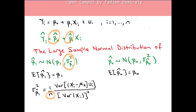The variances of β₀-hat and β₁-hat have sample size N in the denominator of the formula, so as N increases the variance decreases to zero. When N is large, the distribution of the OLS estimator will be clustered tightly around its mean.